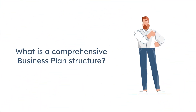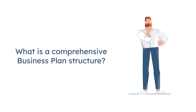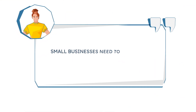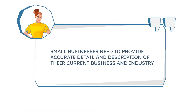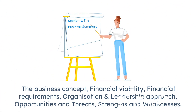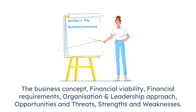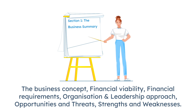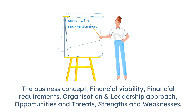But what is a comprehensive business plan structure? Small businesses need to provide accurate detail and description of their current business and industry. Section 1 is the Business Summary, which includes the business concept, financial viability, financial requirements, organization and leadership approach, and opportunities and threats, strengths and weaknesses.